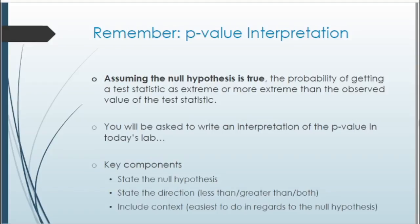For the p-value interpretation, remember: assuming the null hypothesis is true, the probability of getting a test statistic as or more extreme than the observed value. Make sure to state the null hypothesis in context, specify the direction of the alternative hypothesis, and include the context of the problem. These elements will be needed when writing out the p-value interpretation in the ILP.